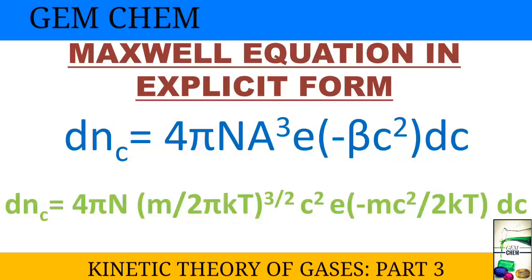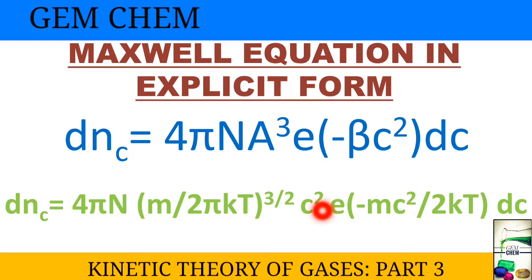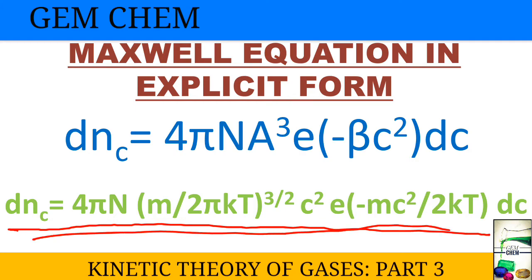On substituting the values of a and beta into the Maxwell distribution equation, we get the final Maxwell equation in explicit form. This is the most important result — the final explicit expression for the Maxwell distribution.